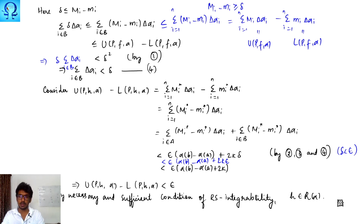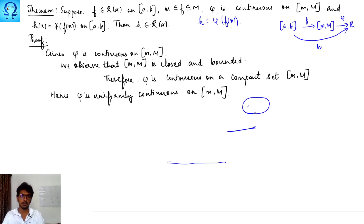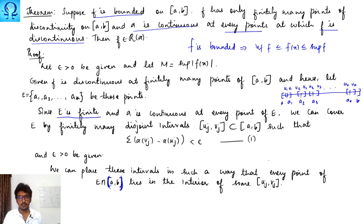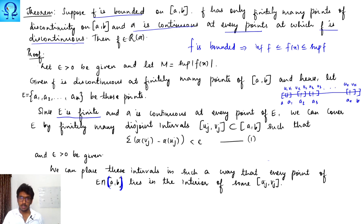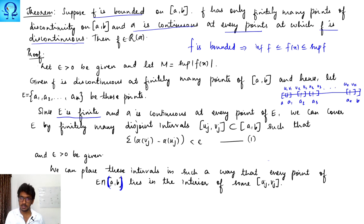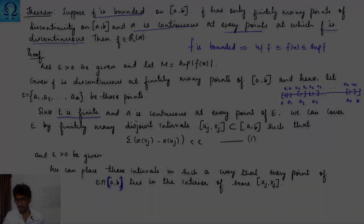A remark based on the previous theorem: if f is bounded with only finitely many points of discontinuity and α is continuous at all those points, then f is RS integrable. However, if f and α share at least one common point of discontinuity, then f need not be RS integrable. That is, α must be continuous precisely at the points where f is discontinuous.